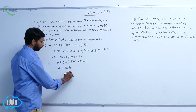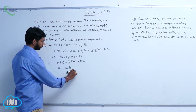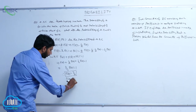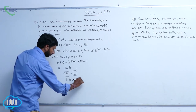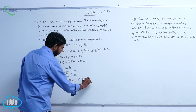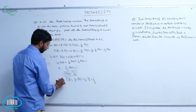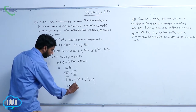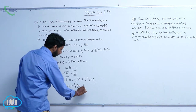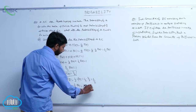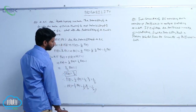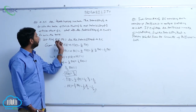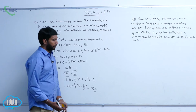Therefore, P(A) is equal to 4 by 7. Then P(B) is equal to half of P(A), which equals half of 4 by 7, equal to 2 by 7. And P(C) is equal to one-fourth of P(A), which equals 1 by 4 of 4 by 7, equal to 1 by 7. So the probabilities of A, B, C to win the race are 4 by 7, 2 by 7, and 1 by 7.